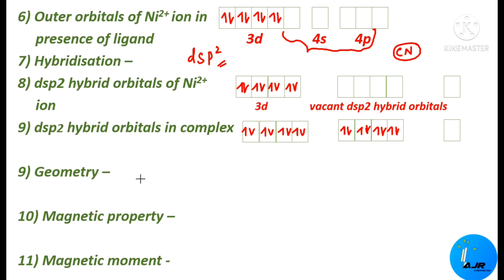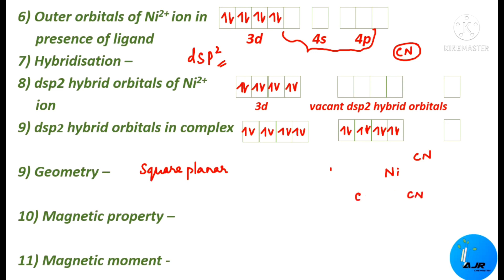The geometry of tetracyanido nickelate 2- ion is square planar. The structure has Ni at the center with one cyanide ligand on each of the four sides, forming a square planar arrangement.